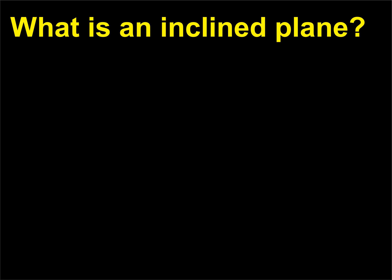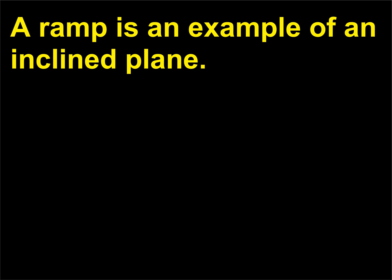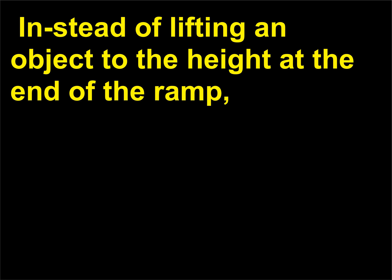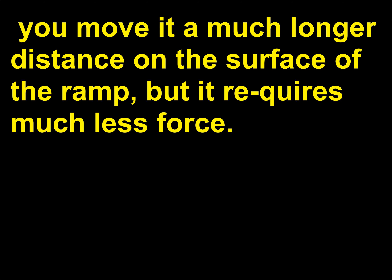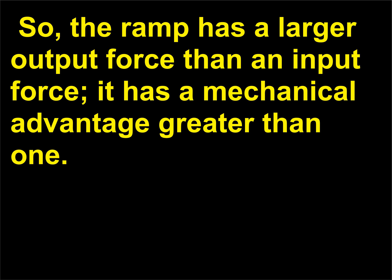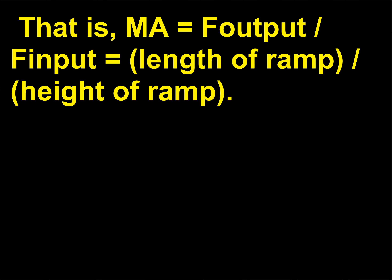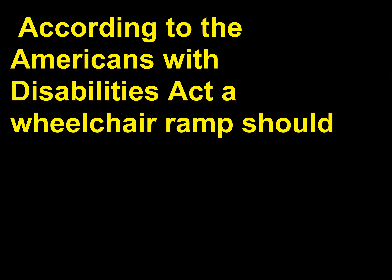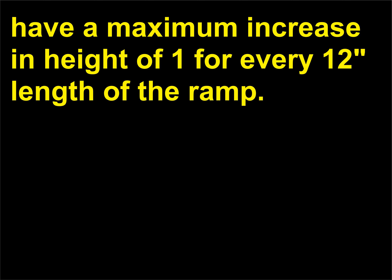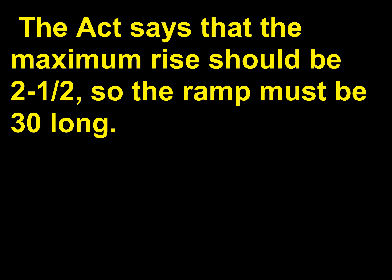What is an inclined plane? A ramp is an example of an inclined plane. Instead of lifting an object to the height at the end of the ramp, you move it a much longer distance on the surface of the ramp, but it requires much less force. So the ramp has a larger output force than input force — a mechanical advantage greater than one. That is, MA = F_output / F_input = length of ramp / height of ramp. According to the Americans with Disabilities Act, a wheelchair ramp should have a maximum increase in height of 1 for every 12 length of the ramp, with a maximum rise of 2.5 inches, so the ramp must be 30 inches long.